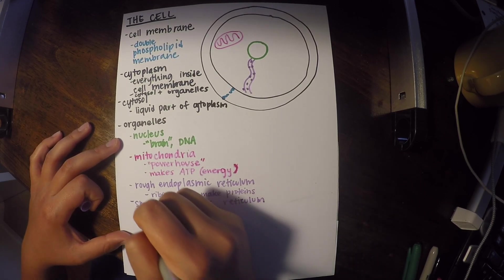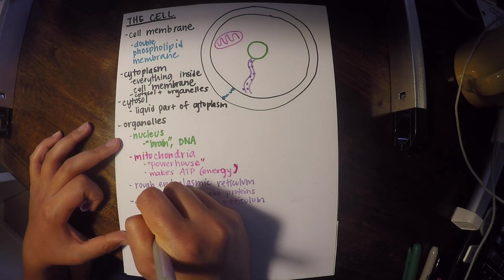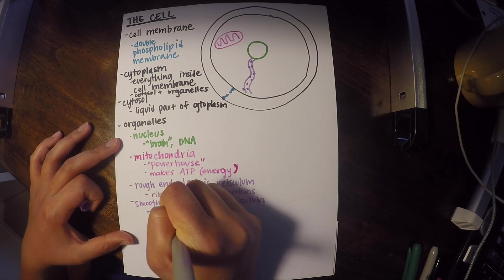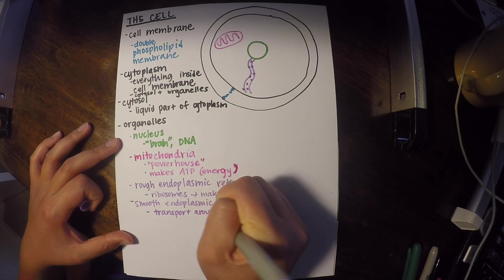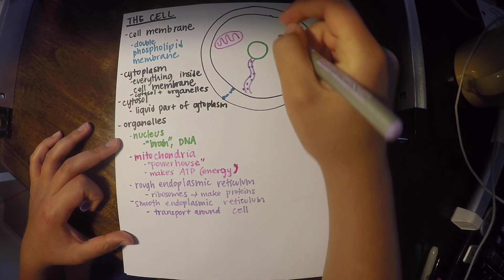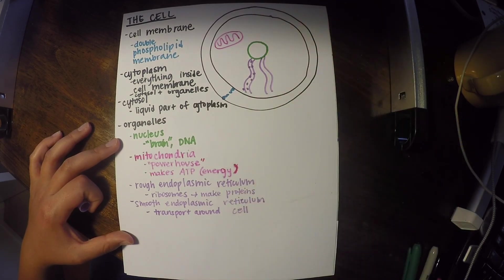And essentially they both help with transport around the cell. So here's the smooth one, and you know it's smooth because it doesn't have any ribosomes on it.